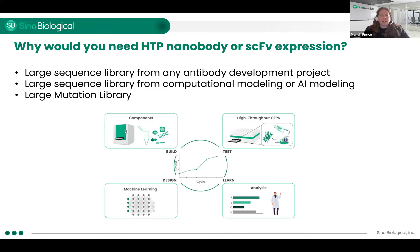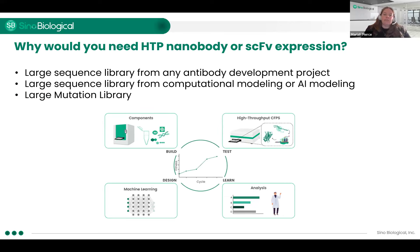Why would we need this high-throughput nanobody screening? There are several different reasons. One is if you do some form of AI modeling where you have your drug target and you're looking for a way to screen a bunch of different sequences all at once. A lot of people do this through AI modeling, and we're able to take that computational AI modeling and bring it into the lab and bio-validate it. Through these types of techniques, we'll have a huge library of different sequences to screen for affinity or standard expression.